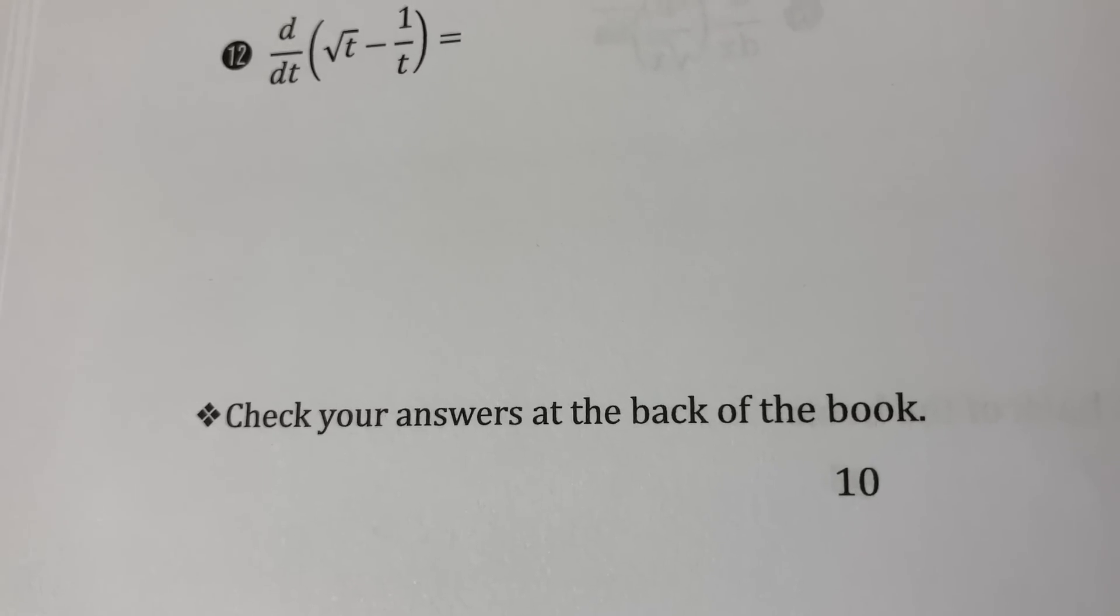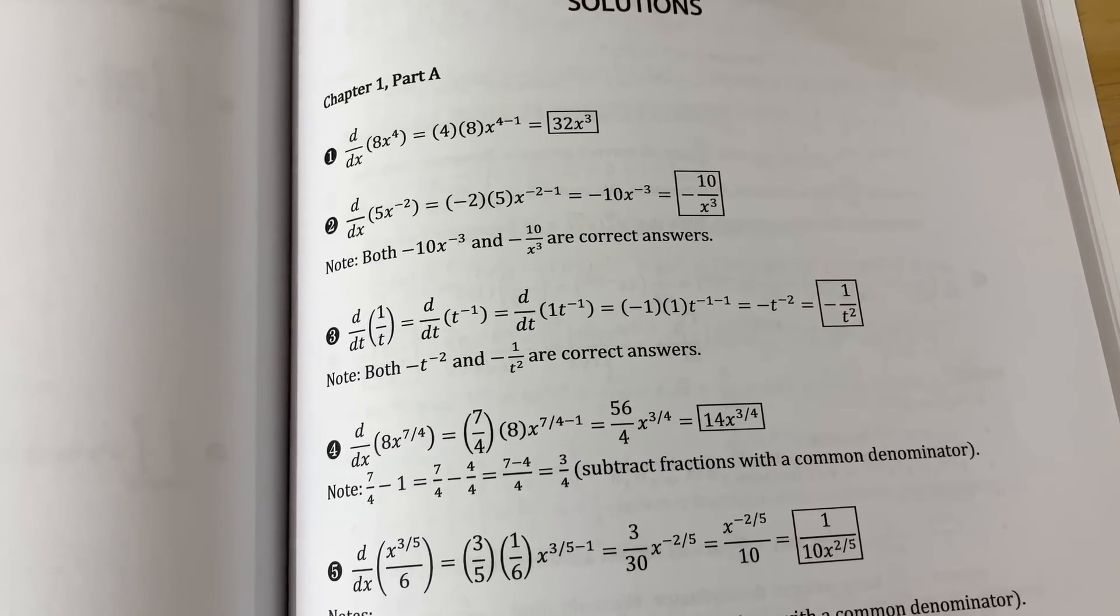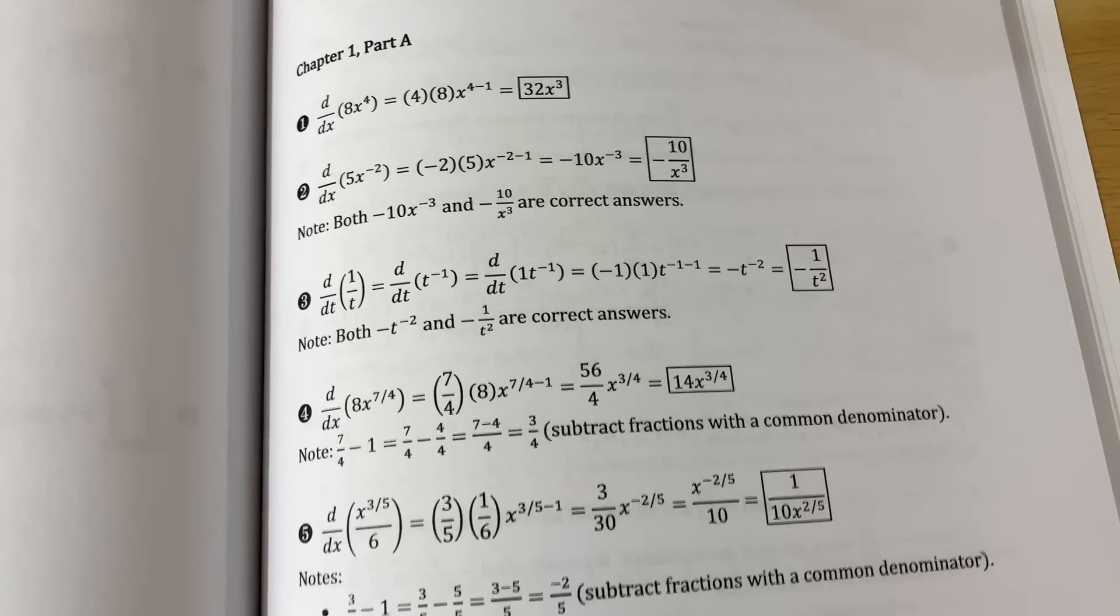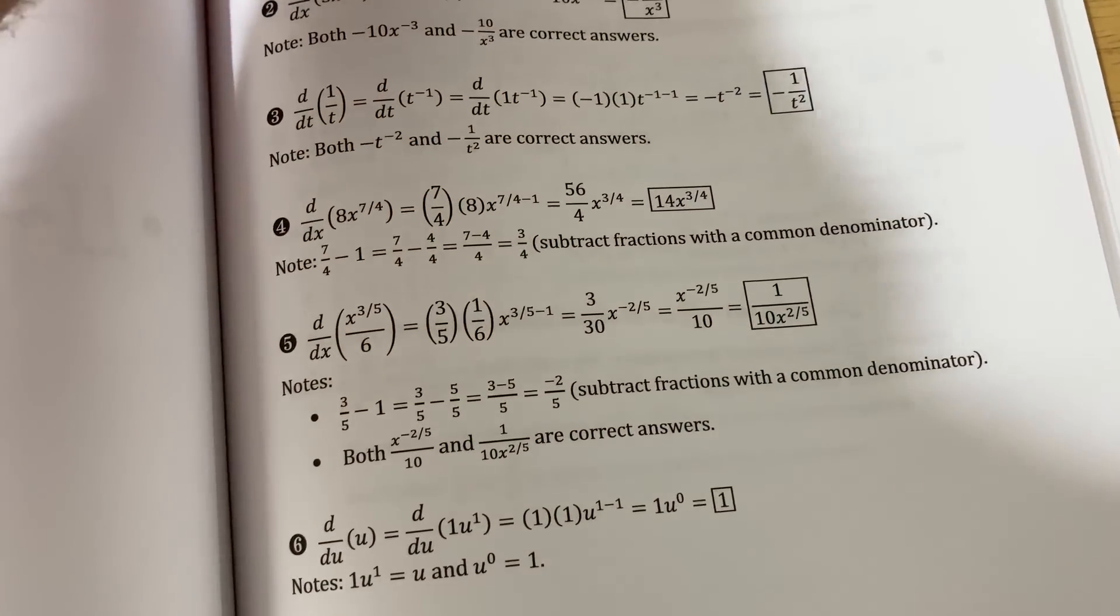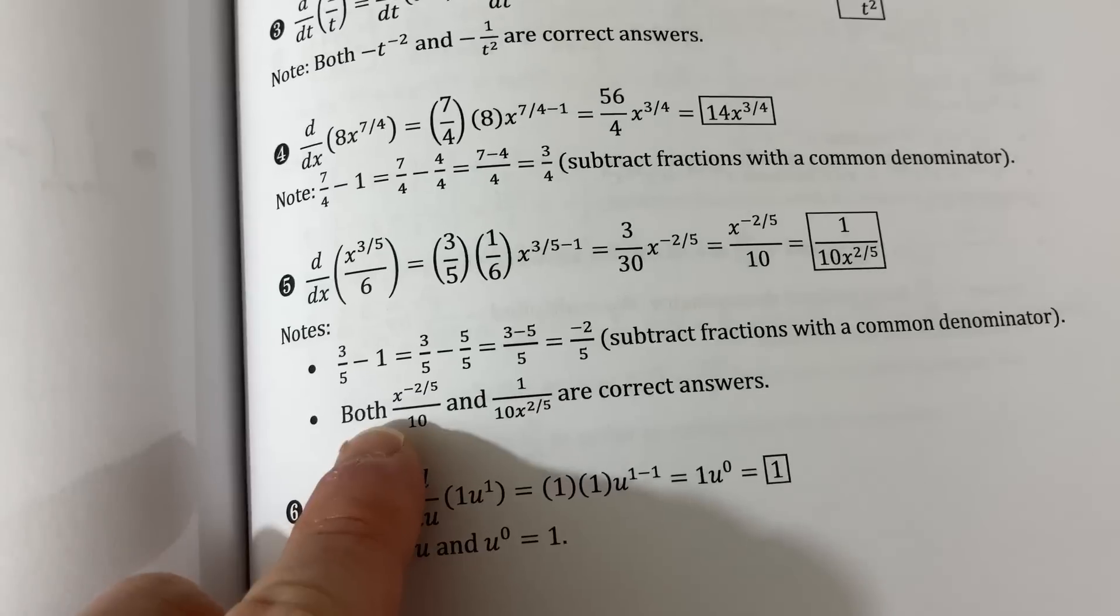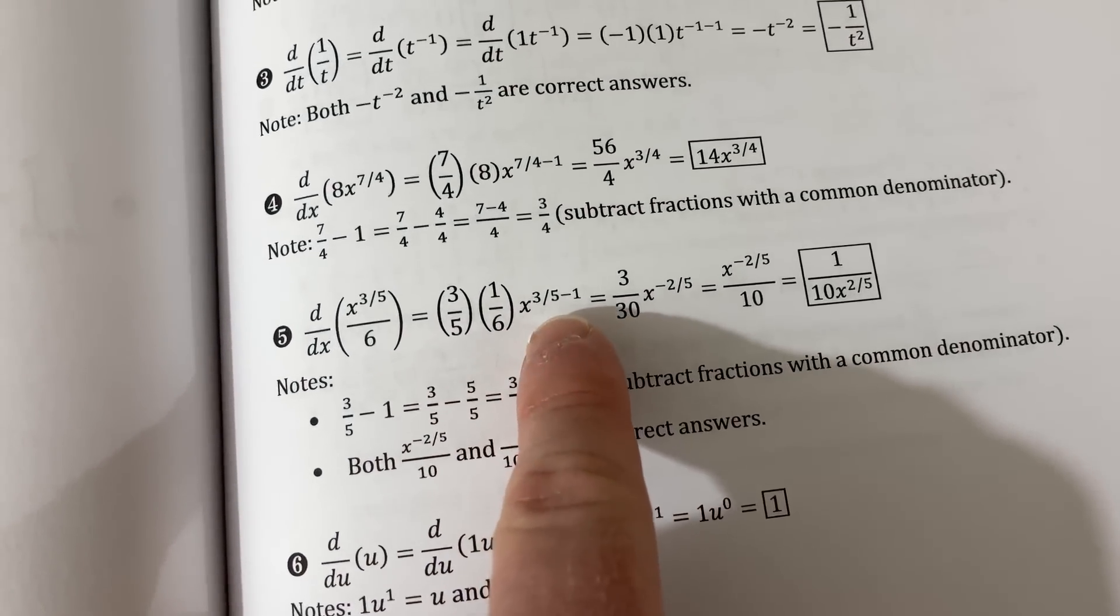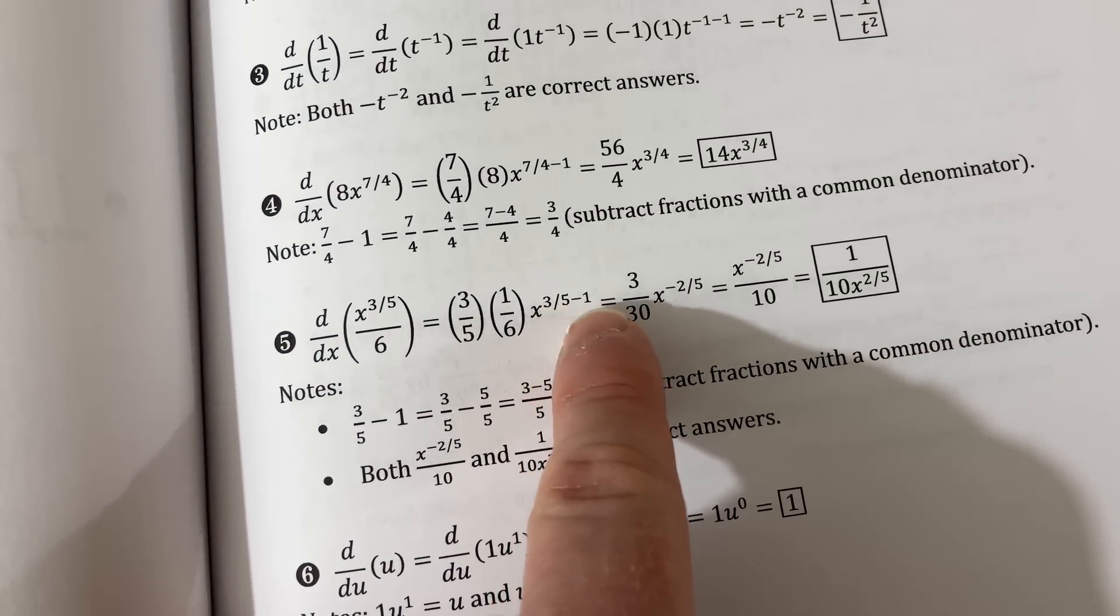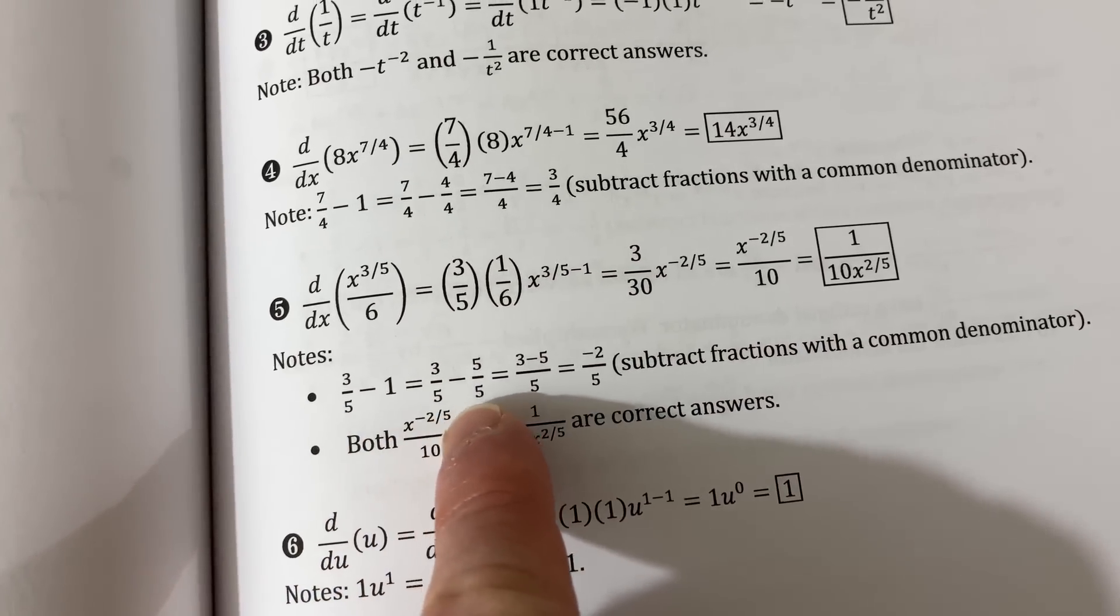Check your answers at the back of the book. Chris has solutions to every single problem in the book, not just the odds, but every single problem. Not just solutions, but actual full solutions where he goes through and explains everything. Look at this here - he's explaining how to subtract one from three fifths, because we're using the power rule. He does all the math for you.